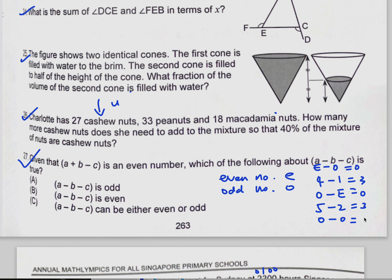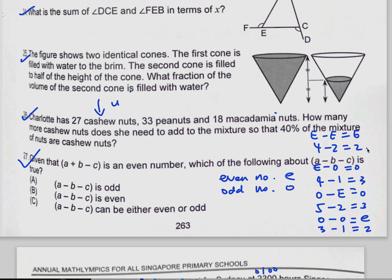...let's say three minus one will give you two, which is even. And of course even minus even will give you even — four minus two is two.